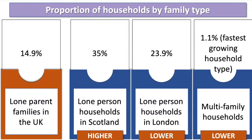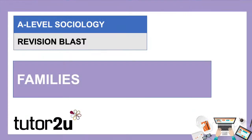Although 1.1% sounds very low, it is actually a fast-growing household type. Reasons include the cost of property — people reducing accommodation costs by moving in with elderly relatives or younger family members. These statistics came from the most recent Office for National Statistics release on families, around 2019. Really impressed with loads of great answers — it's nice to go beyond knowledge recall and apply sociological knowledge.